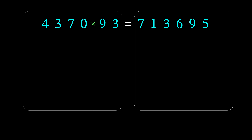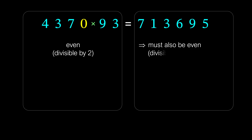After placing the multiplication sign on the left after 0, we understand that the number on the left is even — it is divisible by 2, because it will end with 0. In any case one of the factors ends with 0, which means the number on the left is divisible by 2. Then the number on the right must also be divisible by 2.